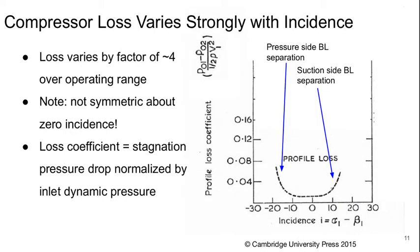The loss in compressors also varies strongly with incidence. Loss can vary easily by a factor of four over the operating range of compressor blades, and it's typically not symmetric about zero incidence. So here we have a loss coefficient. This loss coefficient is the stagnation pressure drop normalized by the inlet dynamic pressure. And again, we see this plotted incidence, and where the loss rises at positive incidence, this is due to boundary layer separation on the suction side of the blades. And where it rises at negative incidence is due to the boundary layer separating on the pressure side of the blades.